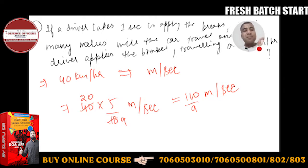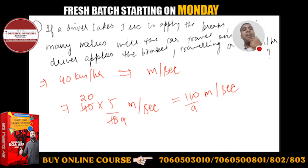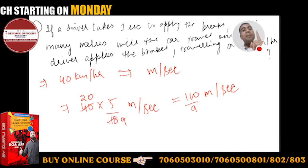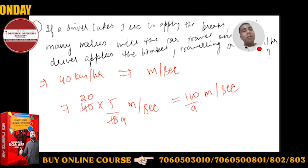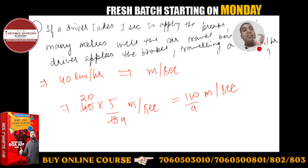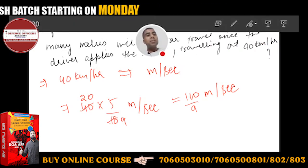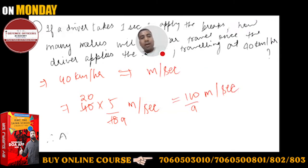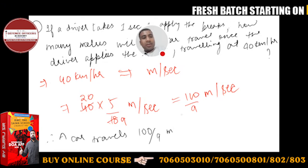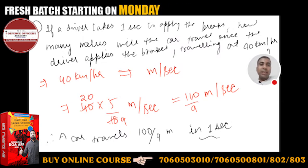यह speed हमें क्या बताती है? 100 by 9 meter per second का मतलब — जैसे 40 km per hour का मतलब है कि गाड़ी एक घंटे में 40 km travel कर रही है — उसी तरह 100 by 9 meter per second का मतलब है कि गाड़ी एक second में 100 by 9 meters travel कर रही है। तो एक second में गाड़ी 100 by 9 meters travel करेगी। Therefore, a car travels 100 by 9 meters in one second.